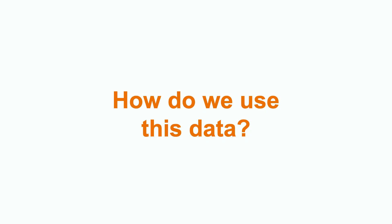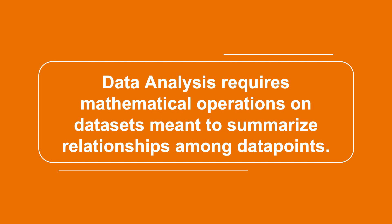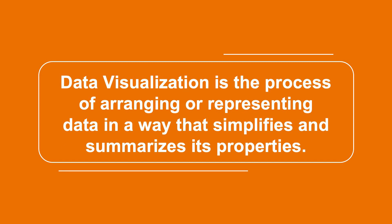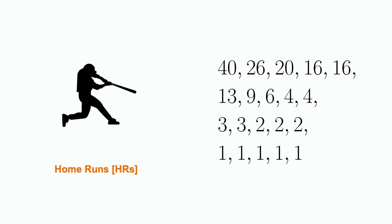Now that we have a setup for what quantitative data is and how, in general, to gather it, we can briefly talk about ways to display and analyze it. Data analysis requires mathematical operations on datasets meant to summarize relationships among data points. Data visualization is the process of arranging or representing data in a way that simplifies and summarizes its properties. This is all about providing images that capture the essence of patterns that would otherwise be difficult to detect in a dataset. To provide some examples for our data analysis, we will be taking a look at the home run tallies for players on the New York Mets in 2022.